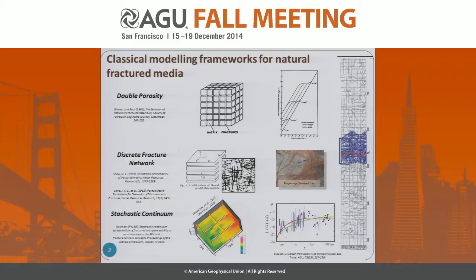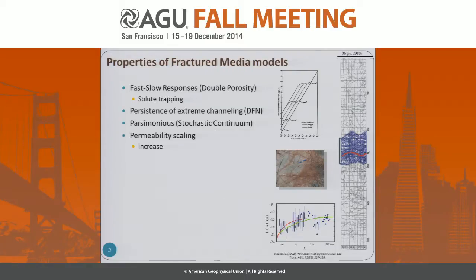These different approaches have both advantages and drawbacks, and what we would like to propose is some alternative concepts that factorize most of the advantages of these different approaches. These alternative approaches should reproduce fast flow responses both for field testing and solute trapping, and persistence of extreme channeling — while being parsimonious and reproducing the same kind of permeability scaling.